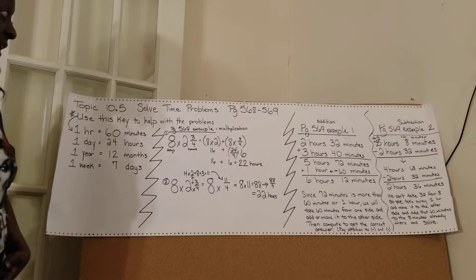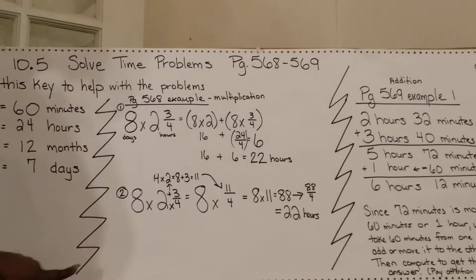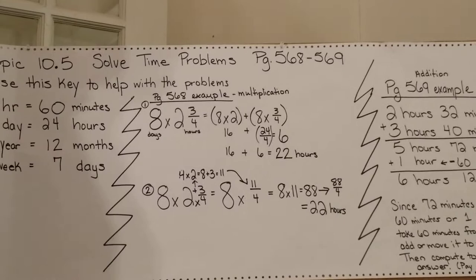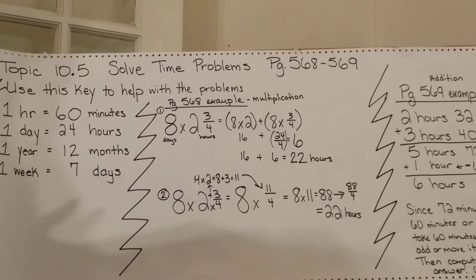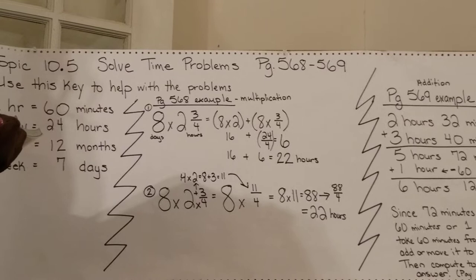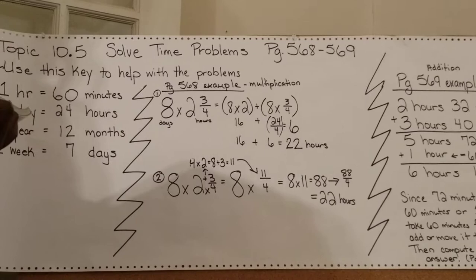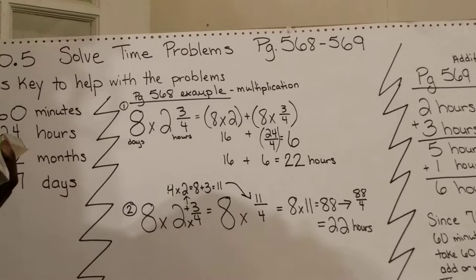The first example is on page 568. If you read the problem, you'll get this information. Crystal is training for a race. She trains every day for eight days. How many hours does Crystal train? She trains 2 and 3/4 hours per day.